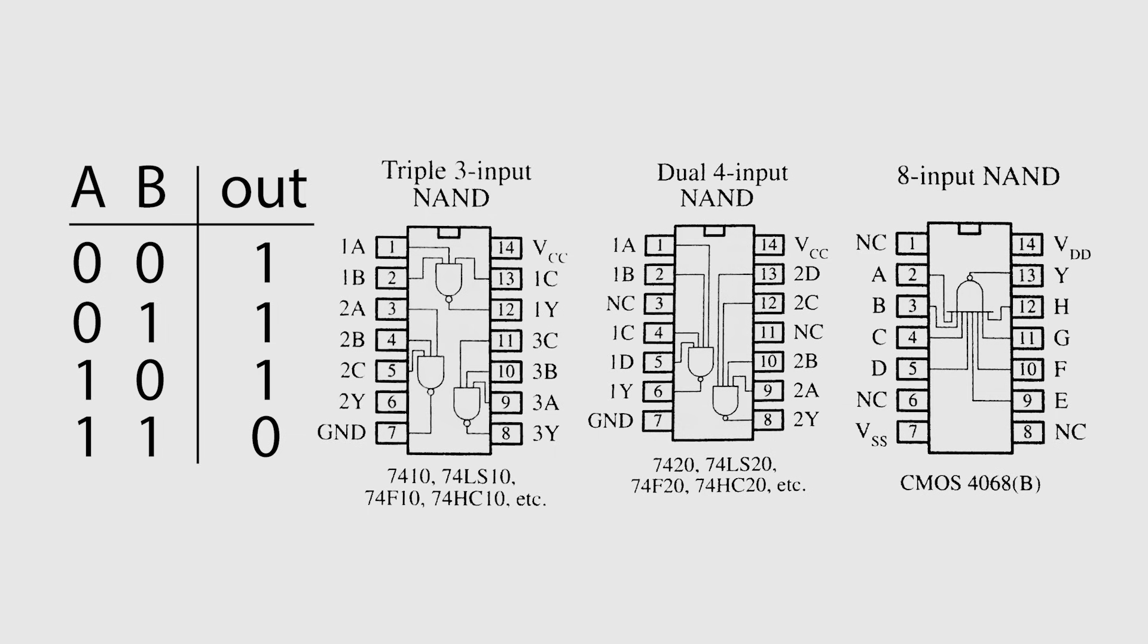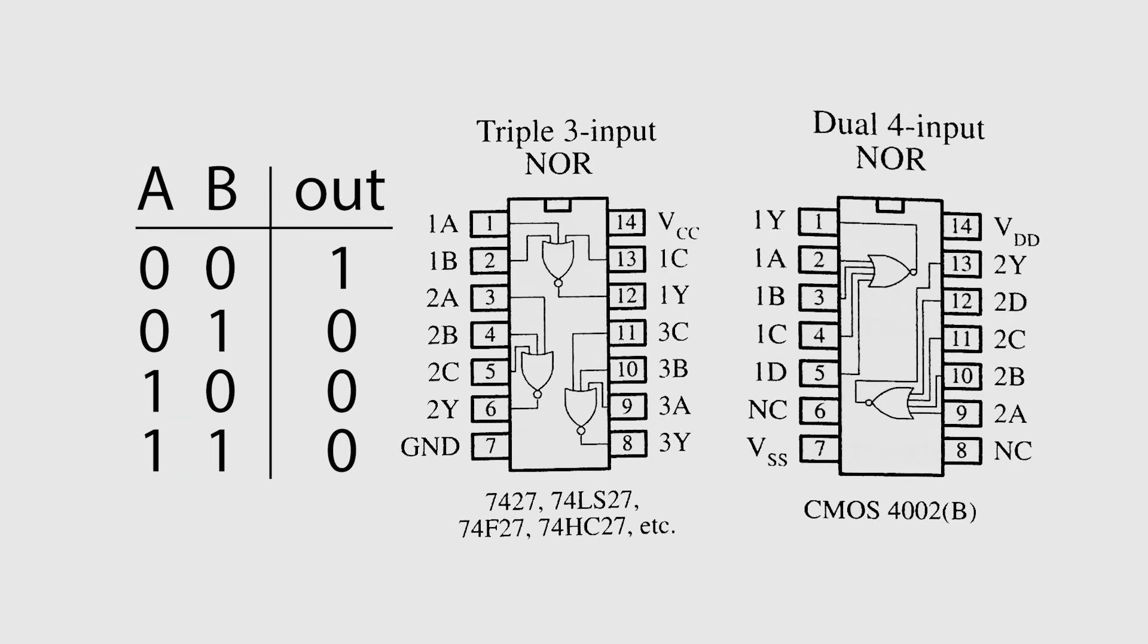With these NAND gates, if none or some of the inputs of a gate are high, the output is high. But if all inputs are high, the output is low. With these NOR gates, all three or all four inputs of a single gate must be low for the output to be high. If any or all of the inputs of a single gate within the chip are high, then the output of that gate will be low.